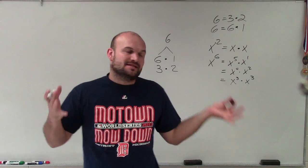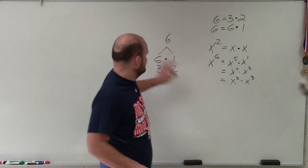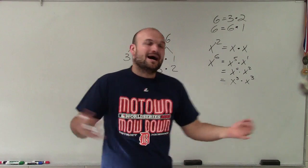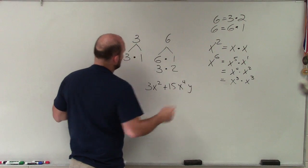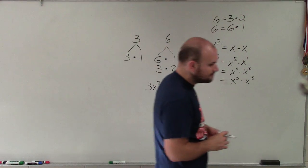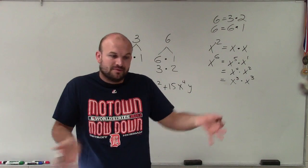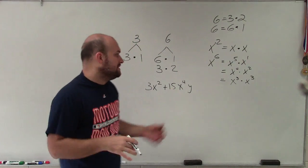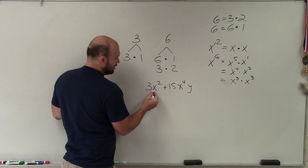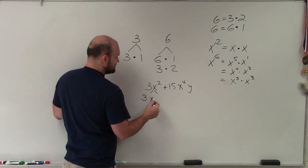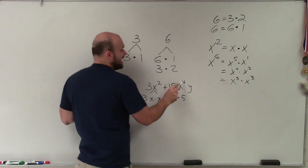There are a lot of different factors. Now let's move from a monomial to a binomial or polynomial. For instance, if I have 3x² plus 15x⁴y, we want to factor this — rewrite it as a multiplication problem, one expression times another. To do that, we factor each term separately: 3x² is 3 times x times x, and 15x⁴y is 3 times 5 times x times x times x times x times y.